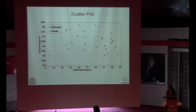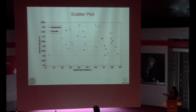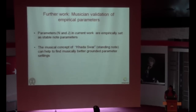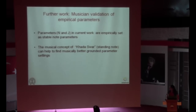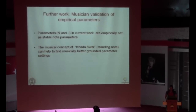By using both measures, we have plotted a scatter plot with the gamak measure on the y-axis and stable note measure on the x-axis. The Carnatic clips have been clustered into the top right corner while all the Hindustani clips are in the bottom left, showing that the two parameters can be used for classifying both styles. While N and J were decided empirically for the current work, it is essential that the musical concept of khada swar — or standing note — will help improve this measure using musically better-grounded parameter settings. I will now call upon Kausto.